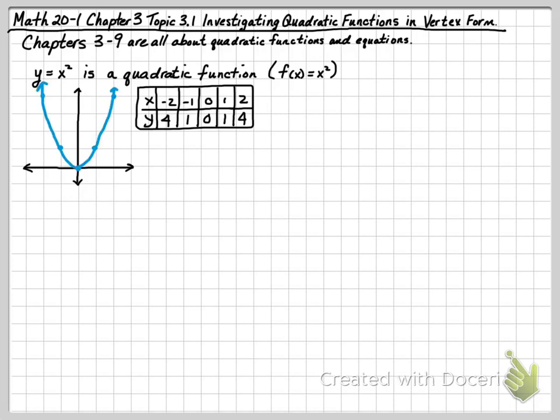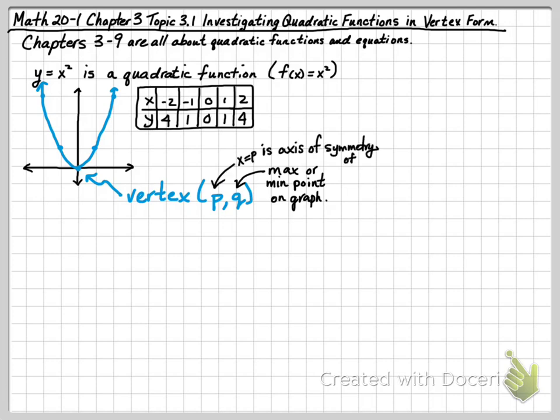Connecting those dots gives us the shape of a parabola. The vertex is the bottom or the top point, the maximum or the minimum of our parabola. The vertex here is called the point PQ. Q is the maximum or the minimum point on the graph. X equals P is the axis of symmetry of our graph. It's going to be symmetrical on a line that goes through the origin. If you flipped it over, it would land on itself. Or if you rotated it 180 degrees, it would land on itself.